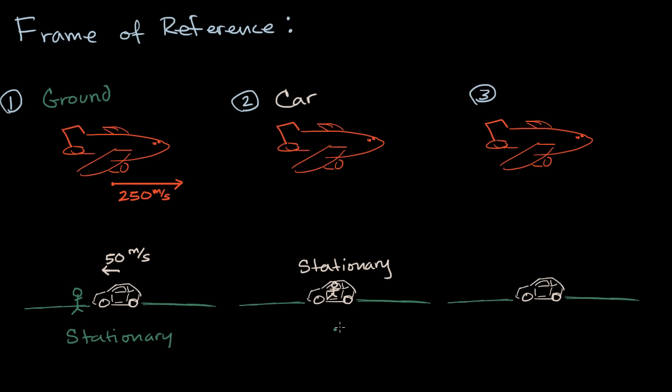And so from your point of view, the ground would actually look like it's moving in this direction, in that direction, at 50 meters per second. It would look like it's moving behind you, or in this case, the way we're looking at it, to the right, at 50 meters per second.